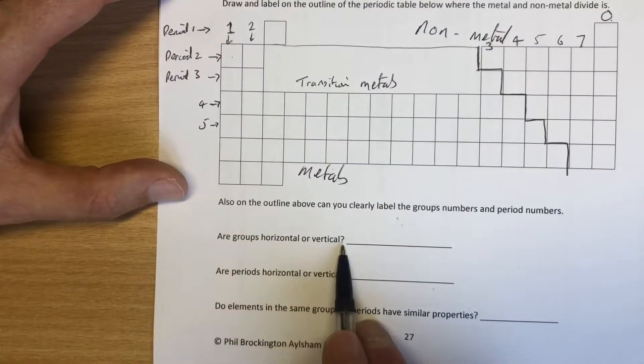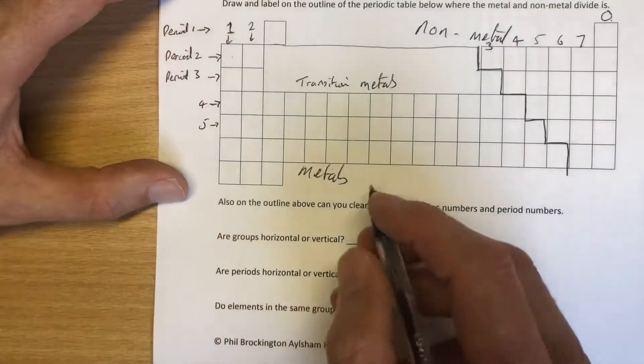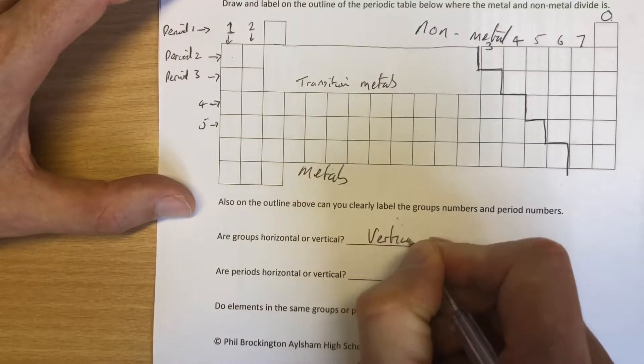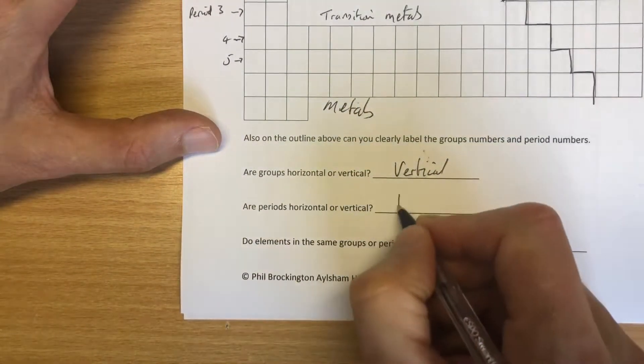So, are groups horizontal or vertical? Groups go down, vertical. Are periods horizontal or vertical? Horizontal.